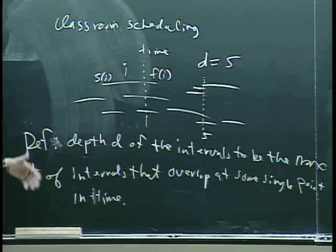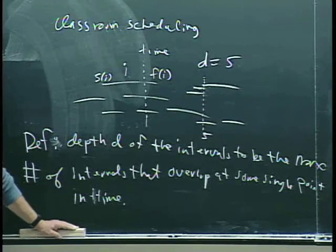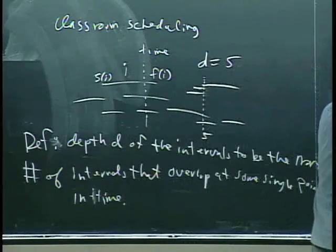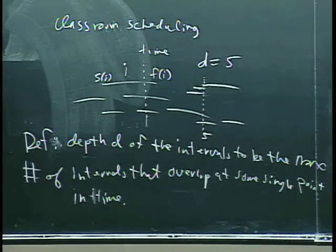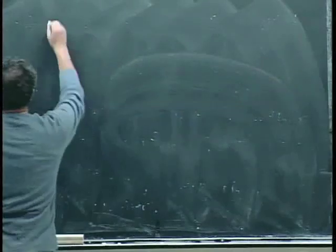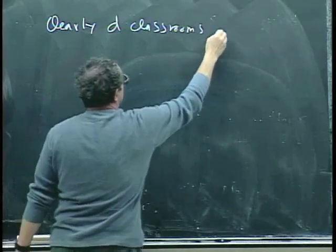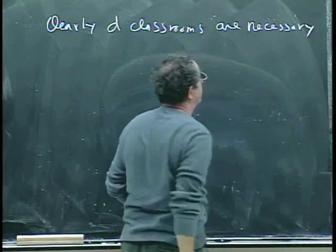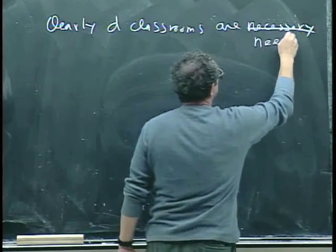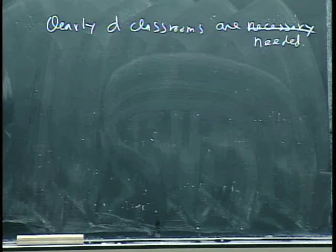And so clearly, you need at least D classrooms. Whatever the depth is, you need at least that many classrooms. So what we want to prove is that D is sufficient. So clearly, D classrooms are necessary. I can't spell necessary, so I'll just say needed. So D classrooms, at least, are needed. The question is, is D always enough?